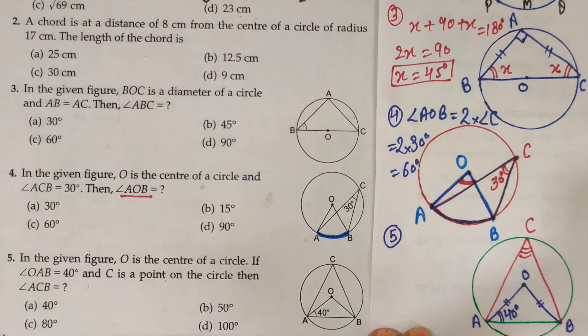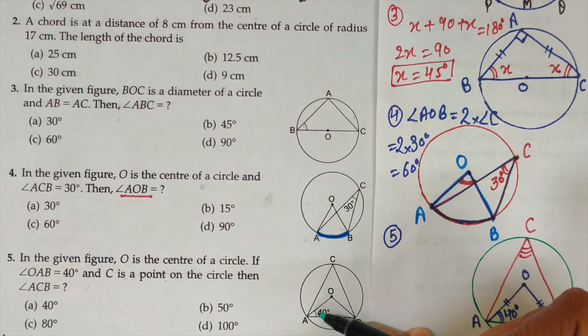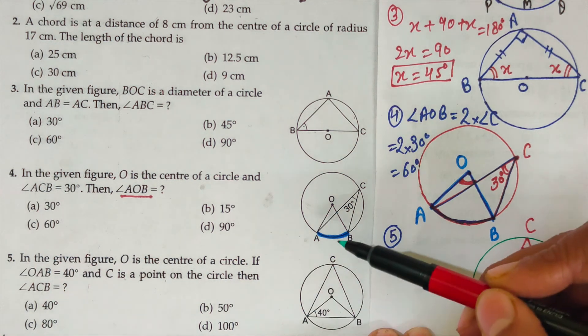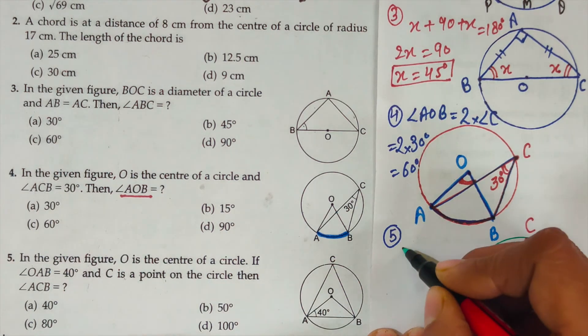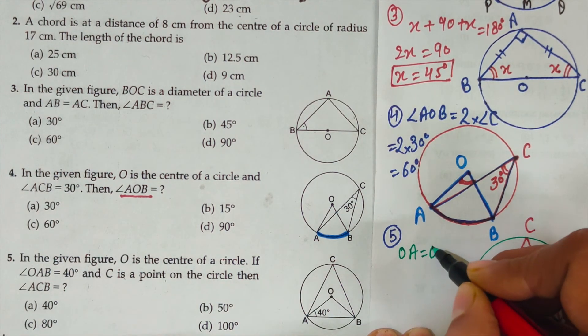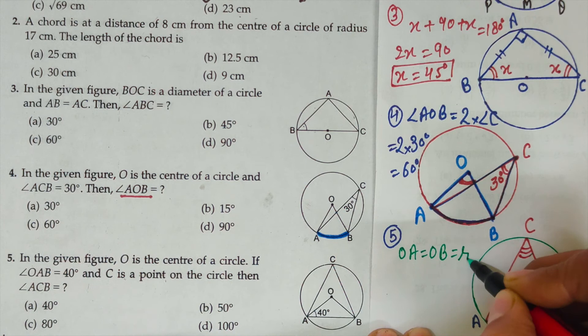In question number 5, O is the center of the circle and angle OAB at point A is 40 degree. And then C is a point on the circle and we have to find out angle ACB. OA and OB, these two are radii, so OA equals OB. So triangle OAB becomes an isosceles triangle.